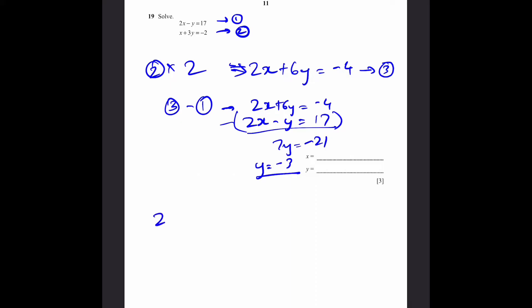Now substituting this, 2x minus minus 3 is equal to 17. This is equation 1, by the way. And 2x is going to be equal to 14. So x equals 7. That's the answer. x equals 7, y equals minus 3.